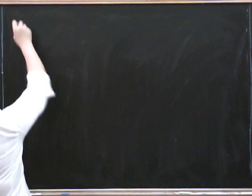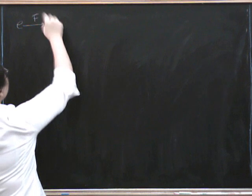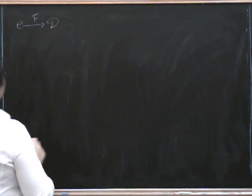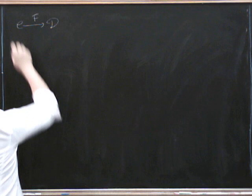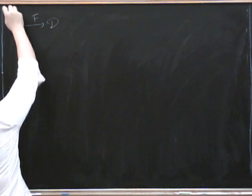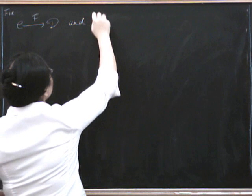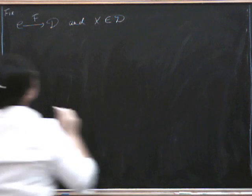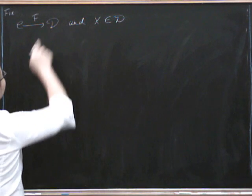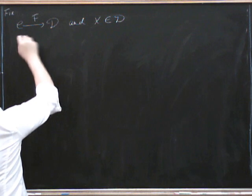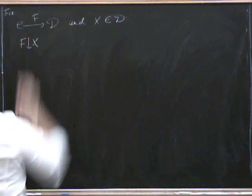Now this time we're going to soup it up a little bit and we're going to start with a functor F from C to D. And this time what we're going to do is we're going to fix this and an object X in D. And what we're going to form, instead of slicing D over X, it's going to be called F down to X.